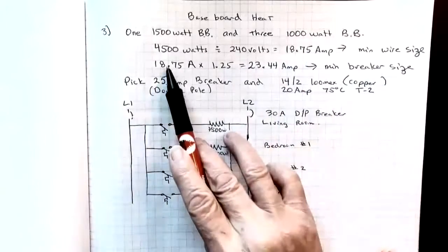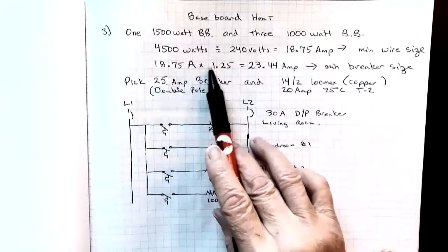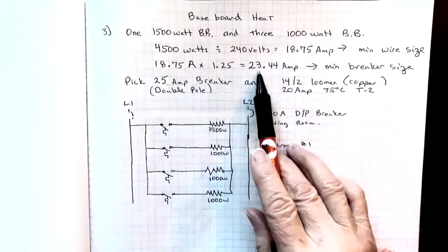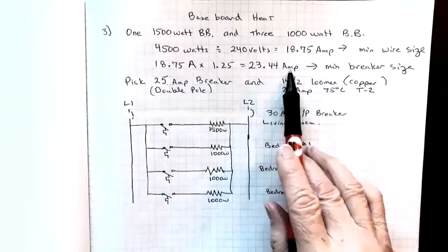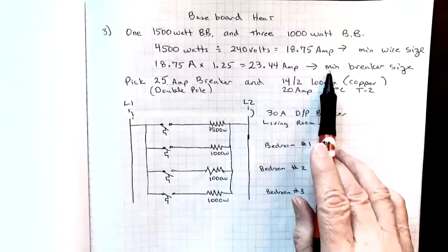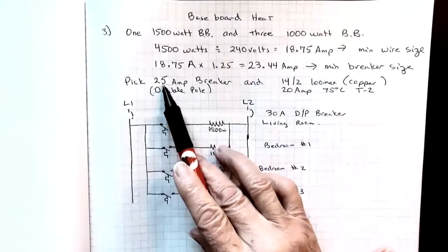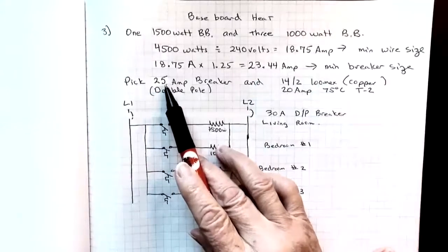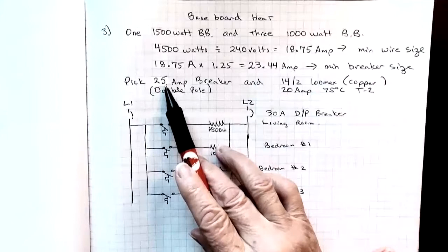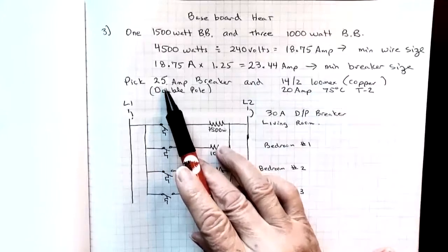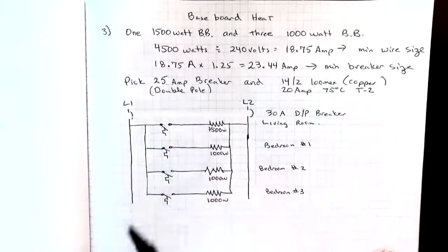To find the minimum breaker size, it's 18.75 times 1.25 giving me 23.44 amps, the minimum breaker size. I go to table 13, I pick a 25 amp breaker. If the brand that you are installing in panel does not have a 25 amp breaker, you are allowed to go to a 30 amp breaker. Now it would be a double pole.